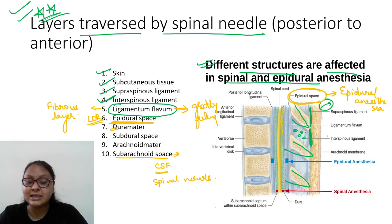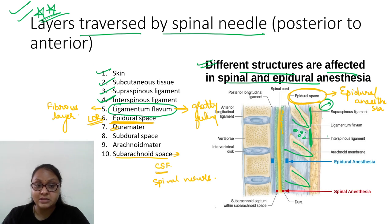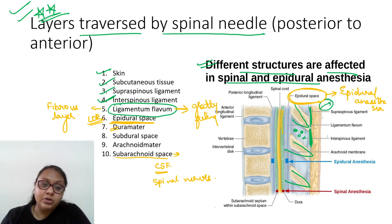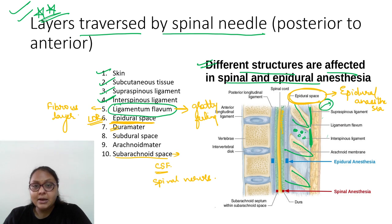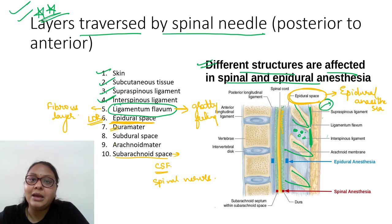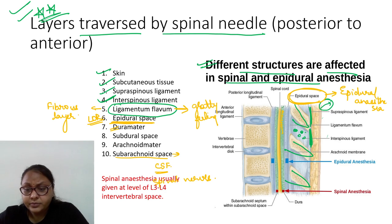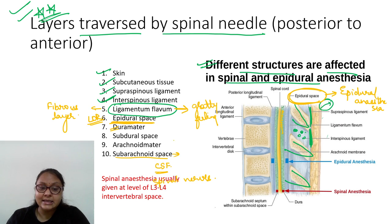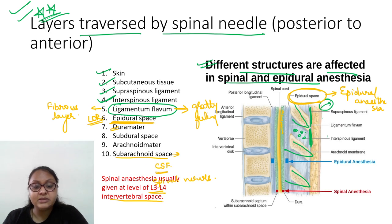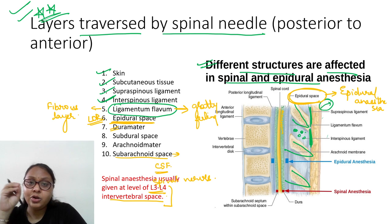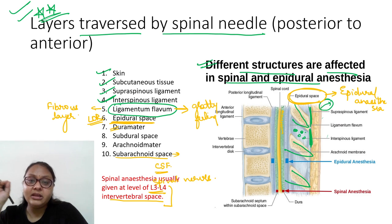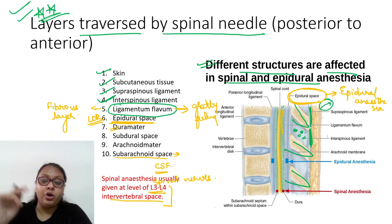So for spinal anesthesia the layers pierced from outside to inside are: skin, subcutaneous tissue, supraspinous ligament, interspinous ligament, ligamentum flavum — at which point you have entered the epidural space — then dura, subdural space, arachnoid, and finally subarachnoid space. Spinal anesthesia is given at the L3-L4 intervertebral space in adults, because the spinal cord ends at L1, minimizing the risk of injury.